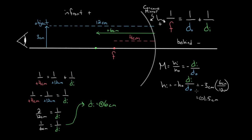The negative sign means the image got inverted — it's flipped upside down compared to the object. The 1.5 centimeters is how tall it's going to be. So we end up with an image six centimeters from the mirror, 1.5 centimeters tall, and upside down. That's what you'd see looking into this mirror — like a fun house mirror. You'd see an upside down image that might look like you could reach out and grab it, but it's just an optical illusion.